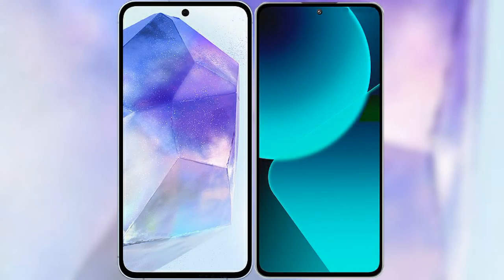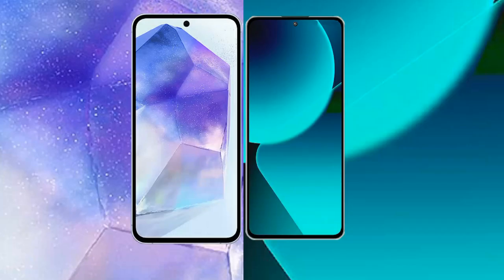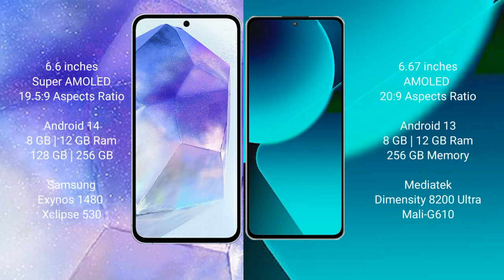I will compare the new Samsung Galaxy A55 with Xiaomi 13T. Samsung Galaxy A55 comes with a 6.6-inch Super AMOLED display with an aspect ratio of 19.5:9. Xiaomi 13T comes with a 6.67-inch AMOLED display and an aspect ratio of 20:9.